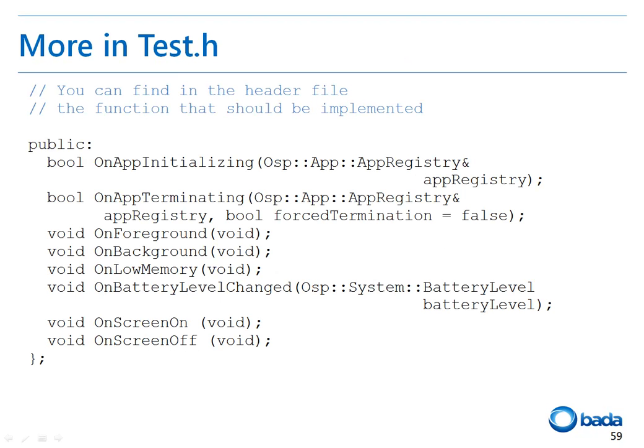Now, let's have a look at the functions implemented in the test.h file. The following functions are defined: the onAppInitializing function that initializes the application, the onAppTerminating function that terminates the application, the onForeground and onBackground functions that manage the state transition of the application, the onLowMemory and onBatteryLevelChanged functions to handle system events, and the onScreenOn and onScreenOff functions to perform monitoring of the screen state.